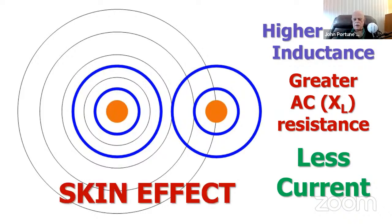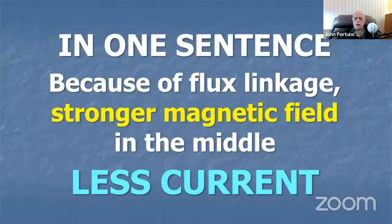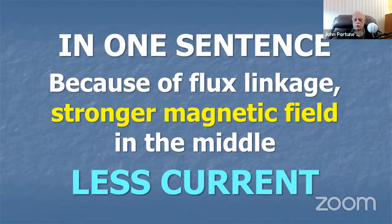This is the basics of skin effect. I finally now — mind experiment, or 'grok,' as Heinlein called it in Stranger in a Strange Land — I grok why skin effect takes place. Greater current on the outside due to greater flux linkage. In one sentence: because of flux linkage, there's a stronger magnetic field in the middle of the wire, therefore less current in the middle due to greater inductance.